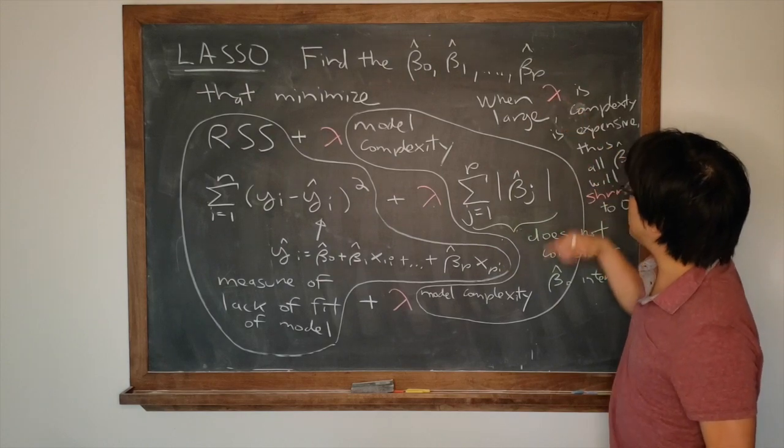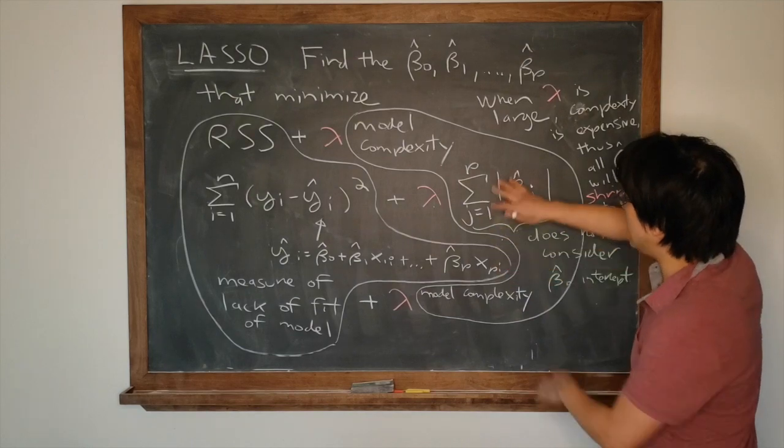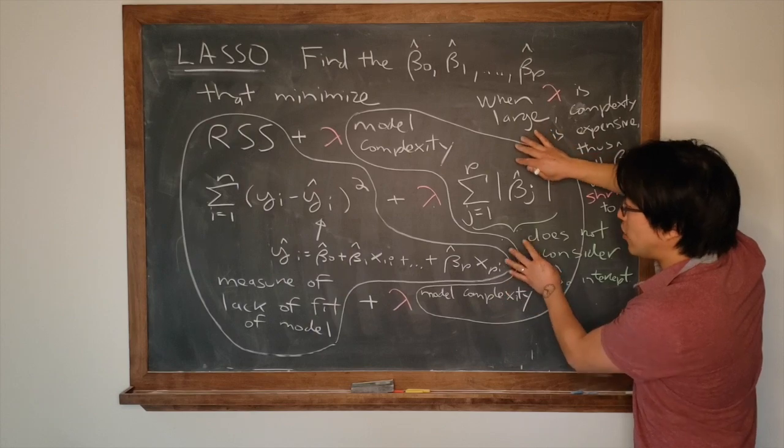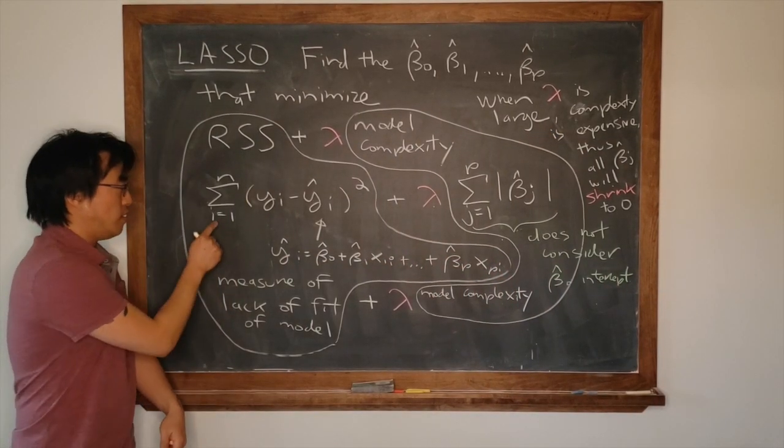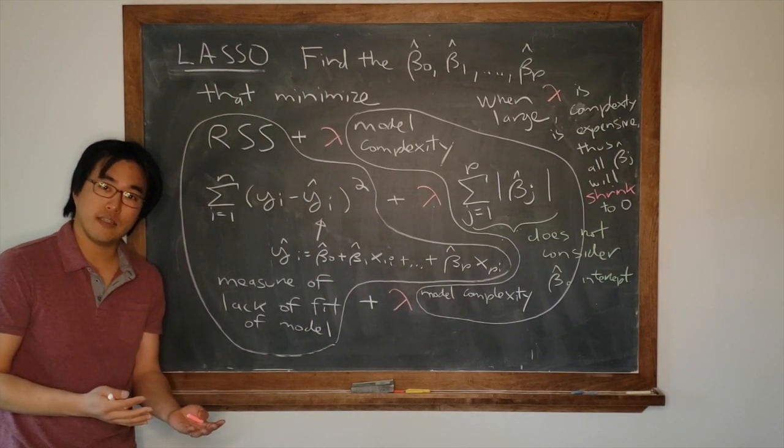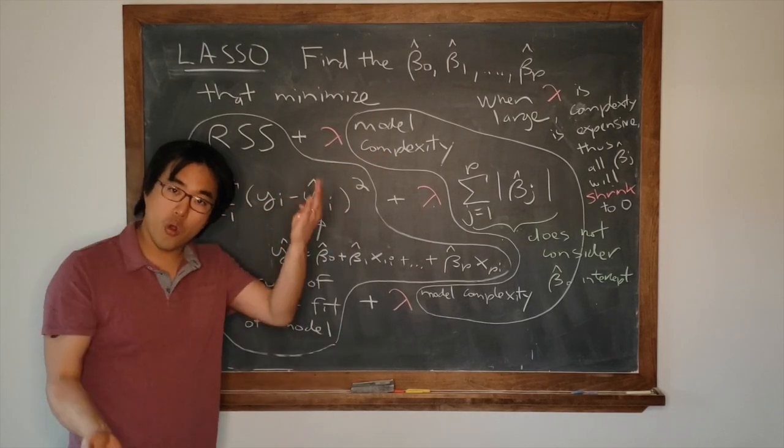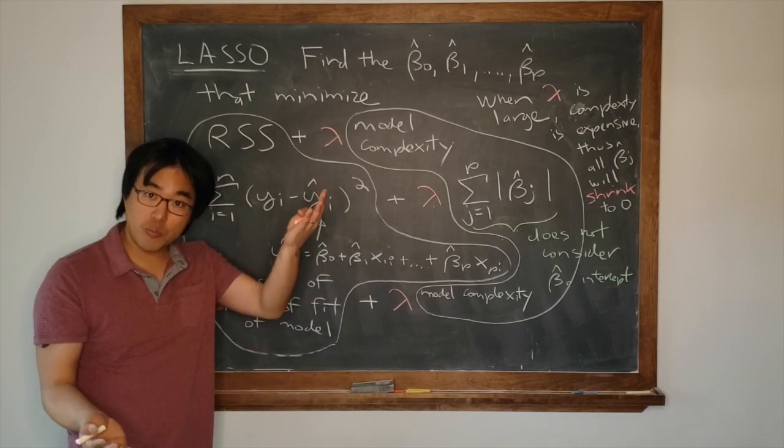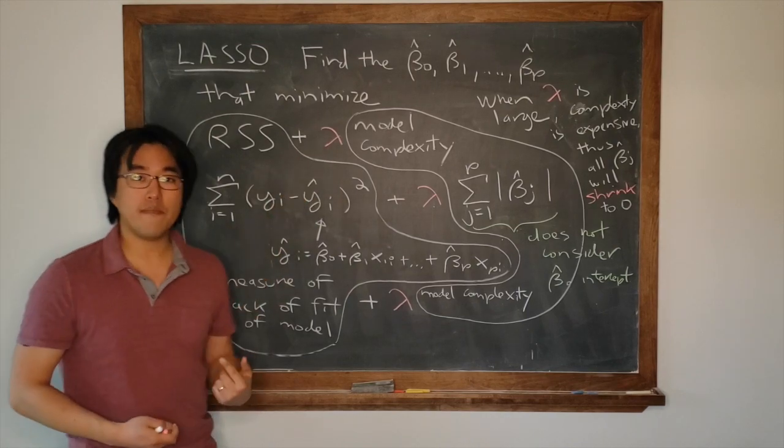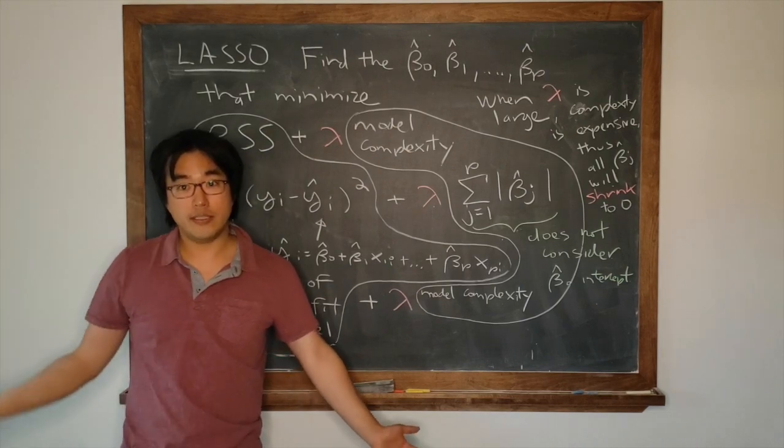But let's say lambda is really small. In other words, complexity is cheap. Well then, you know what, this value can get, you can have a more complex model. And therefore, if we have a more complex model, you can get a better fit.